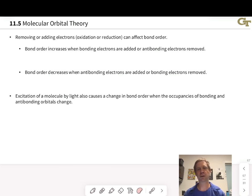Let's start by talking about oxidation and reduction, the removal or addition of an electron respectively to a molecule. Removing or adding electrons can affect bond order, since if we add or remove electrons to the molecular orbitals, we're going to change the numbers of bonding and antibonding electrons and change that bond order calculation.